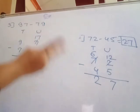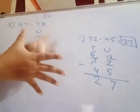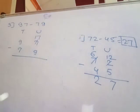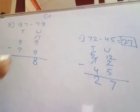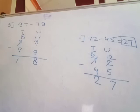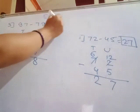Count up from 9 to 17: 9, 10, 11, 12, 13, 14, 15, 16, 17 — that's 8 fingers. Write 8. Then the tens digit becomes one less: 8 minus 7 equals 1. So 97 minus 79 equals 18.